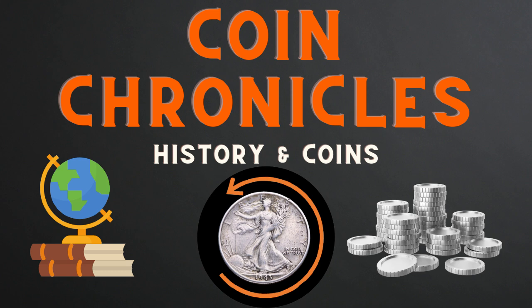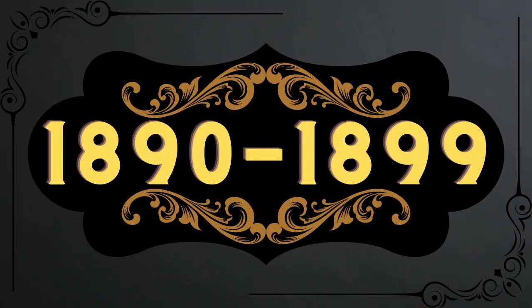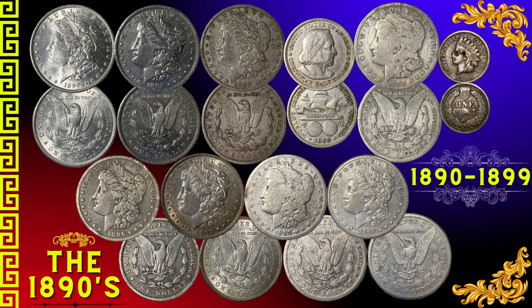Hey, welcome back to Coin Chronicles, this is Bryce. I hope you are doing well. Today we will take a look at the history of the 1890s, from 1890 to 1899. We will also take a look at some coins from each of these years. This will include eight Morgan silver dollars, one Columbian Exposition commemorative half dollar, and one Indian Head cent. We will look at each coin and the important details such as mintage, grading, and inflationary value or purchasing power of the time.